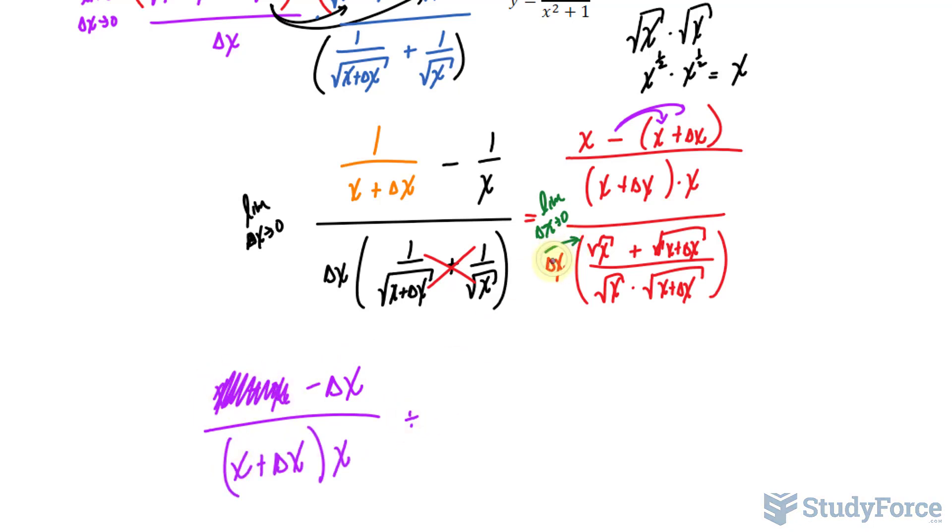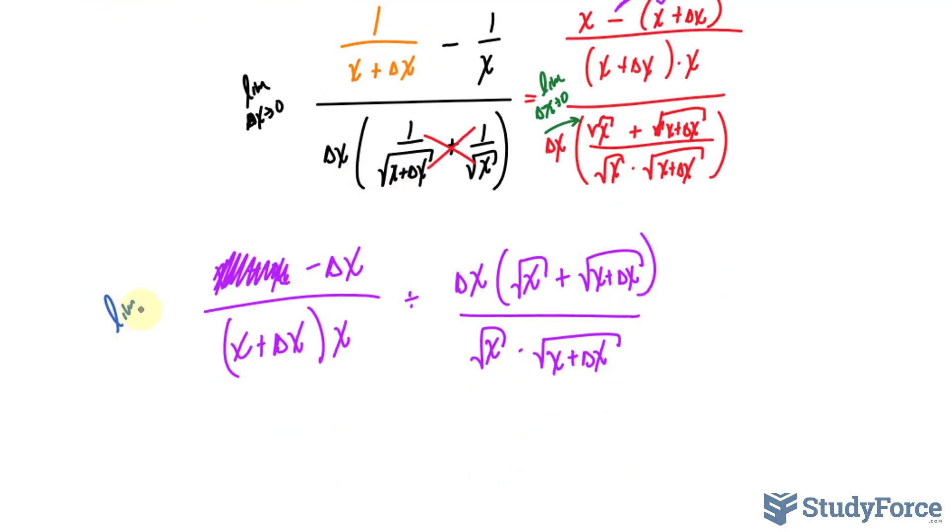Divided by, after multiplying delta x to the top, I get delta x, the square root of x plus the square root of x plus delta x. And the bottom part remains the way it is. And remember, we're taking the limit still. It's a long process.